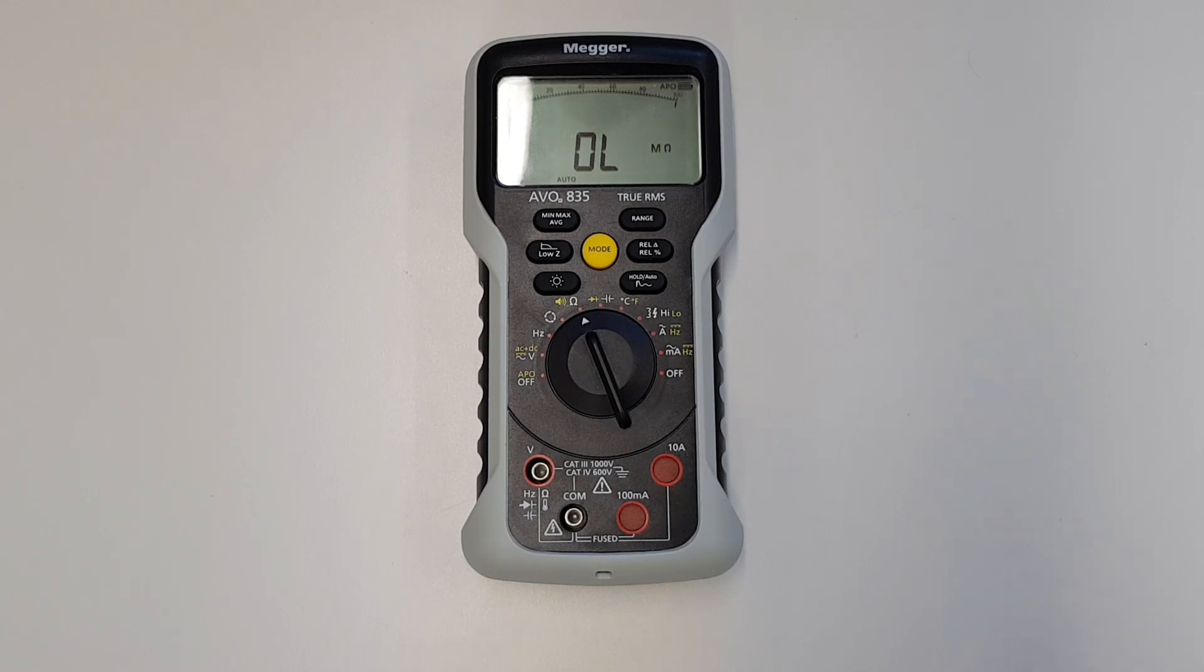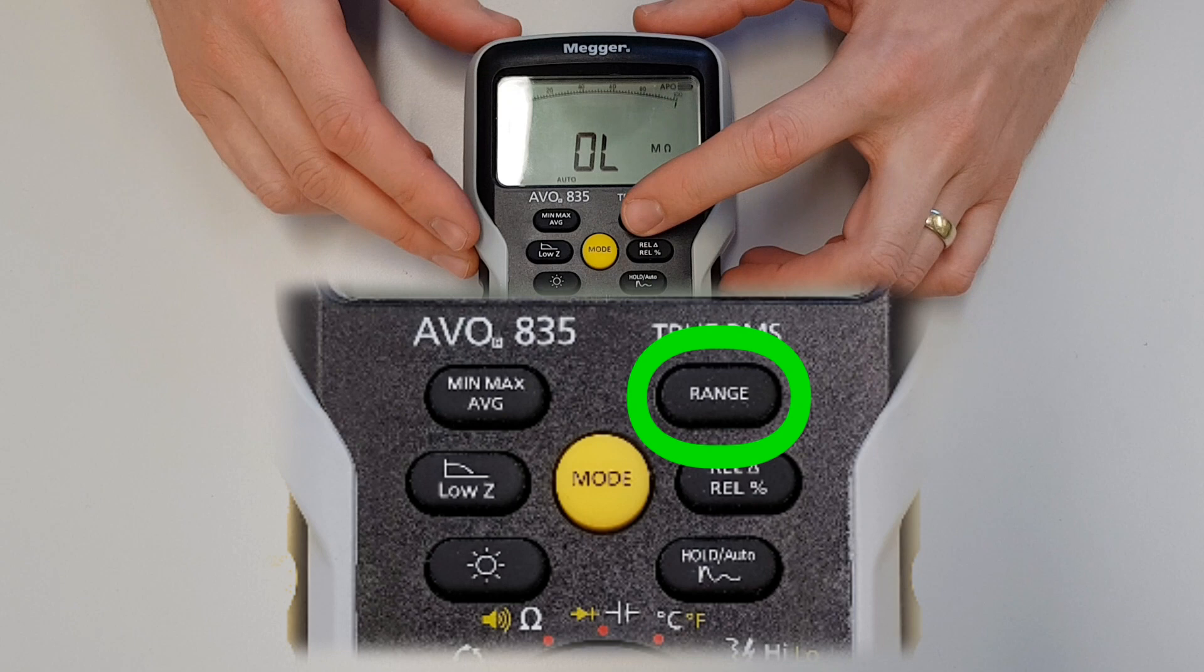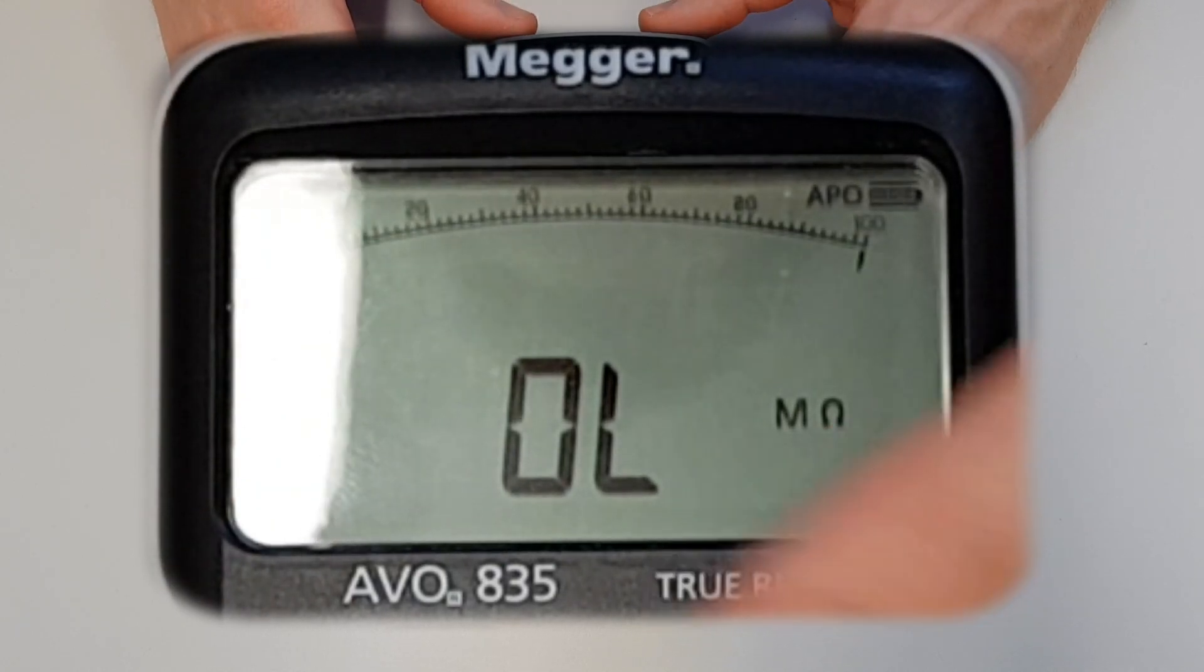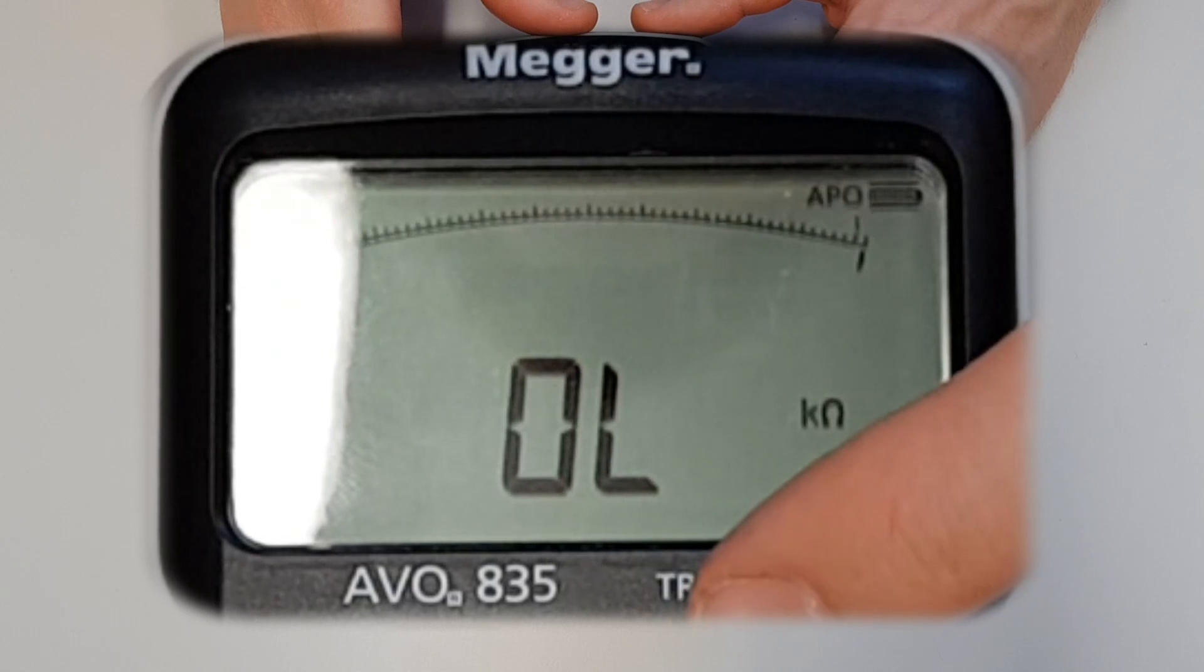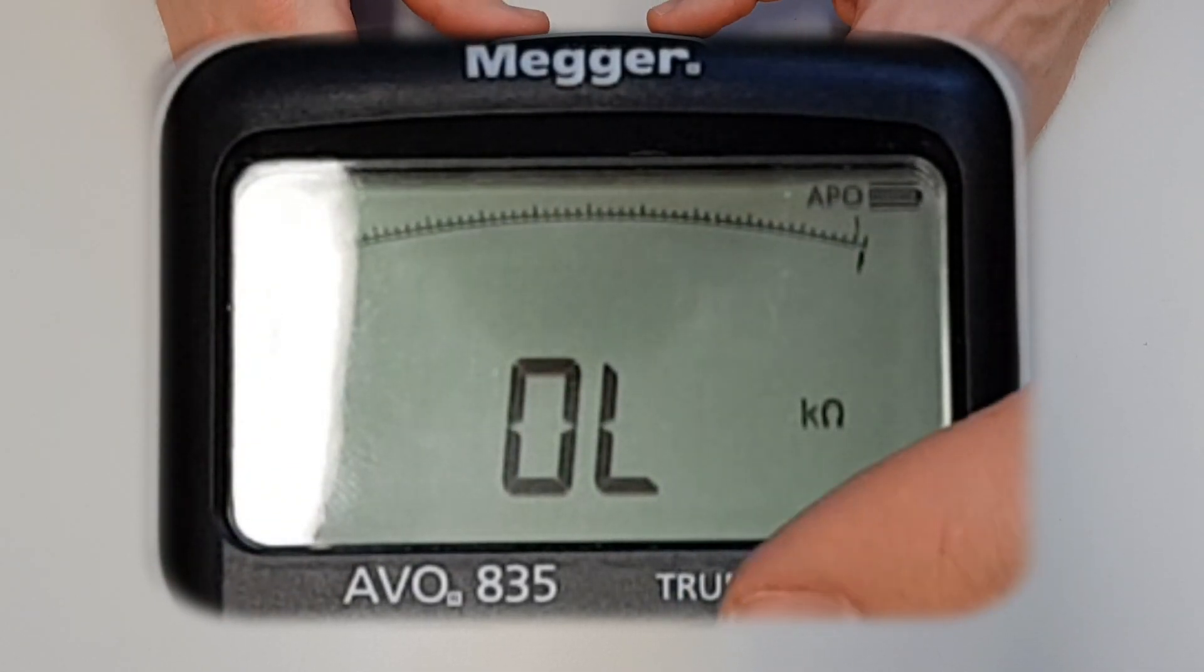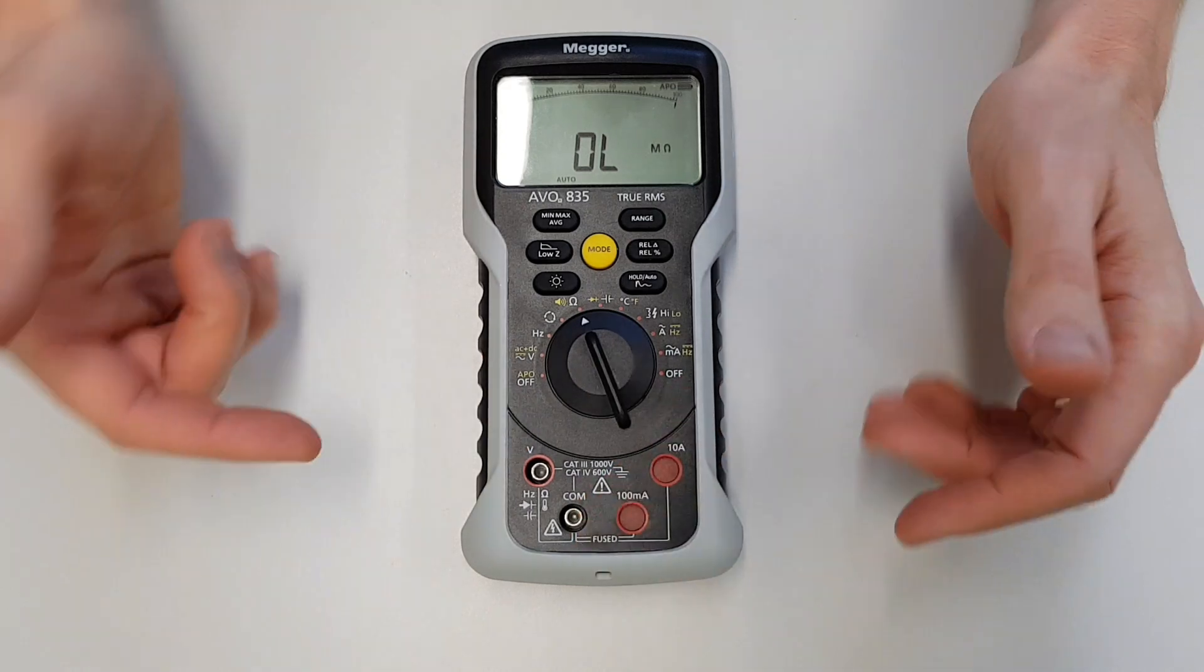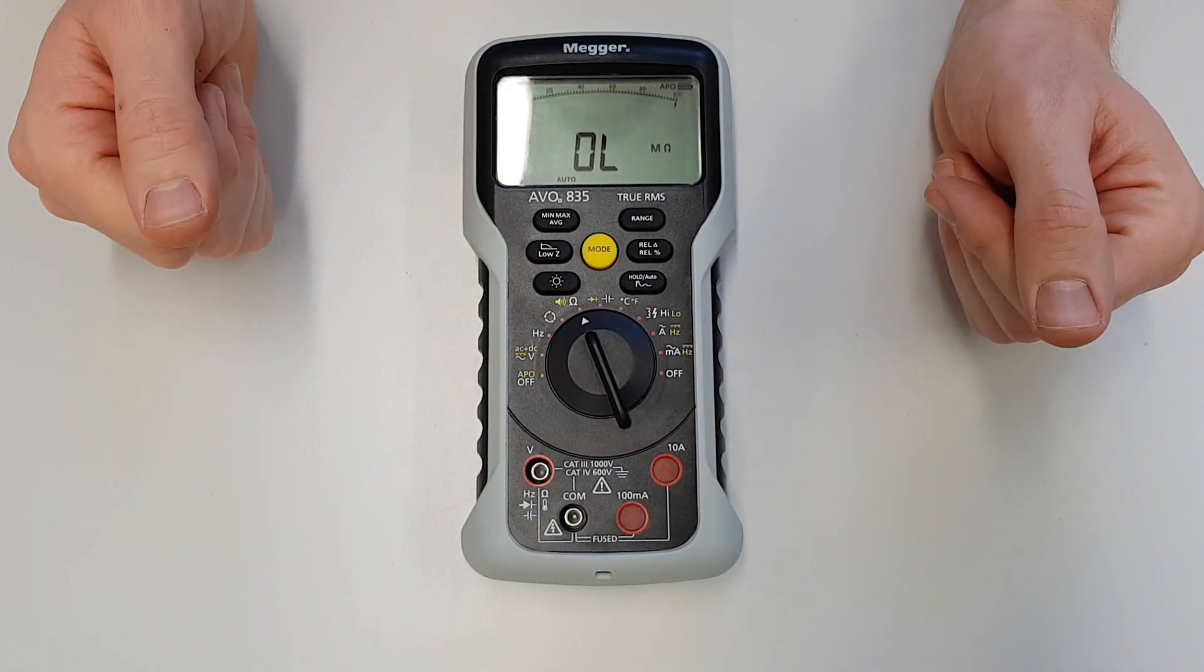If you want to change the range that it's measuring at, we simply press the range button to select our own. This will become a little bit clearer when we actually start measuring resistances, but when we press the range button we can see the auto disappears and we're now in the ohms range. We press it again, we go to the kilohms range. If we want to go back to auto ranging, we just do a long press on range and the auto will come up. Because it's currently trying to measure resistance and there's nothing connected across the terminals, it's automatically gone to its highest range setting.